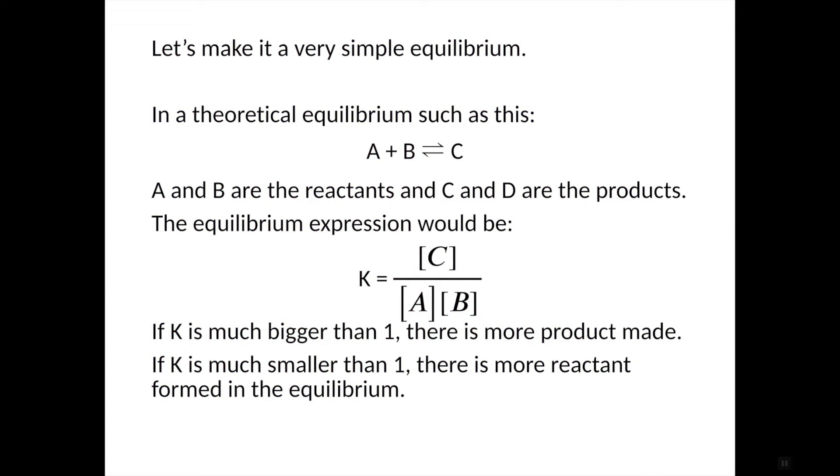Let's make it just a little bit easier and use some symbols. Here A and B is making the product C. Our K equilibrium equation would be the product, concentration of C, divided by the reactants, the concentration of A times B. If K is much bigger than 1, that means that the numerator, C, the product, is there in a much bigger amount.